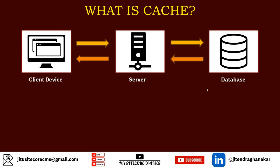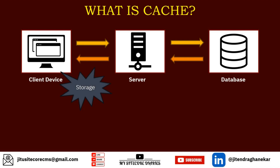So in this process, the client device and the server are each making one trip, and the server is also making a trip to the database. Now, where does cache come into the picture? If you have some storage at the client device, you can store data retrieved from the database there, so there is no need to go back to the server again. Similarly, if you have storage at the server level, you do not have to go to the database to get the data.